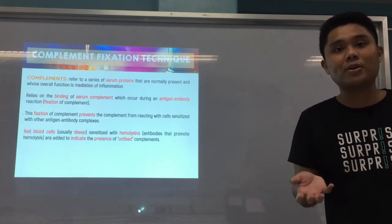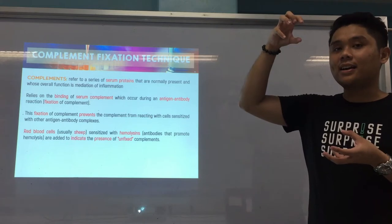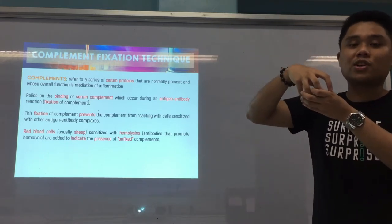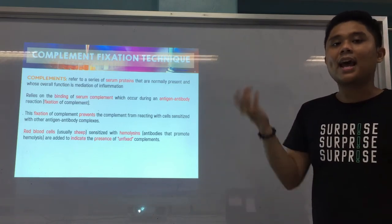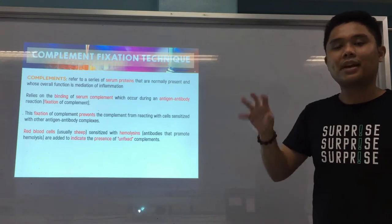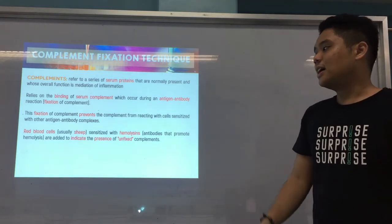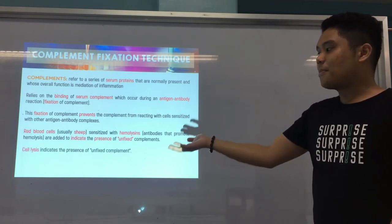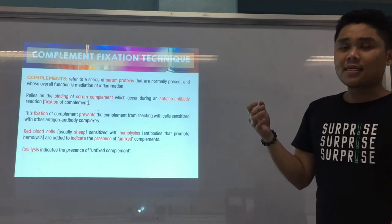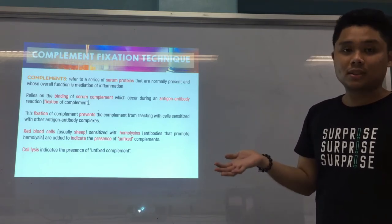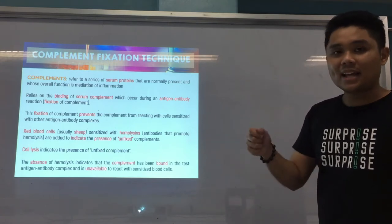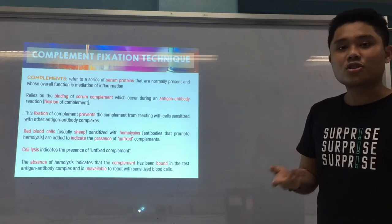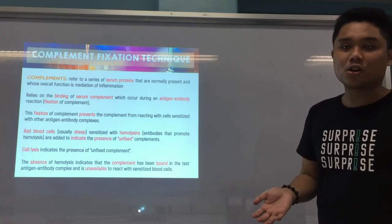Fixation of complement prevents the complement from reacting with cells sensitized with other antigen-antibody complexes. RBCs are usually used — RBCs that have a hemolysin, an antibody that can promote hemolysis, attached on their surface. These are added to the test system to detect if the complements can still lyze the RBCs or not, to indicate the presence of unfixed complements.